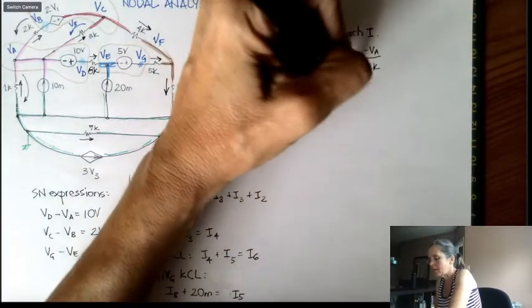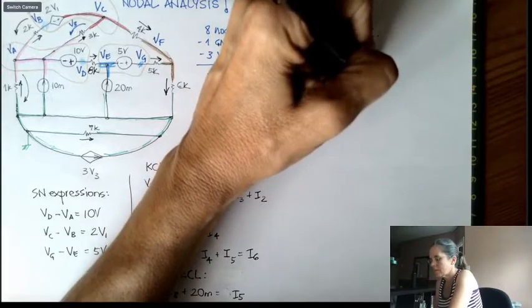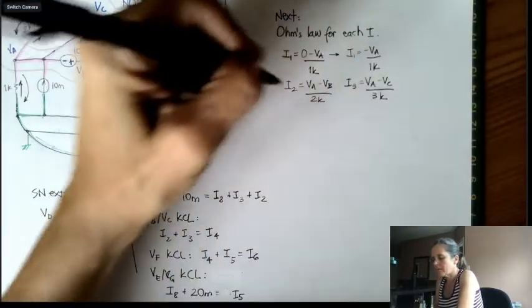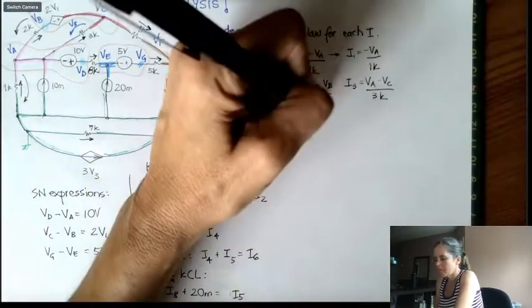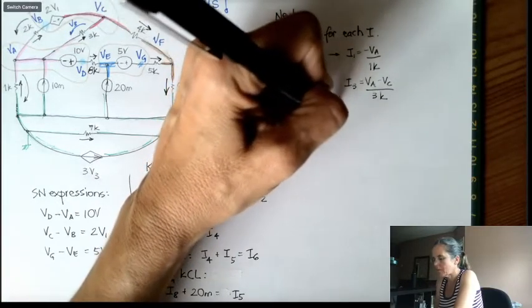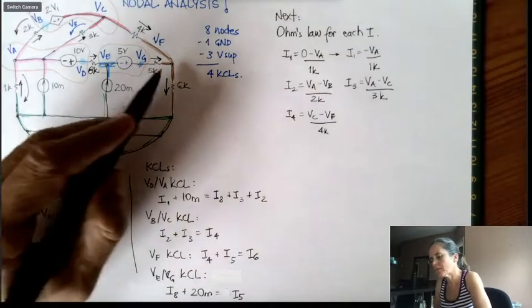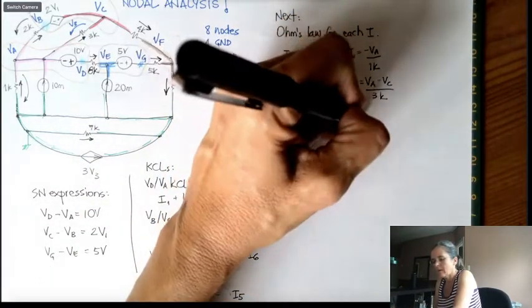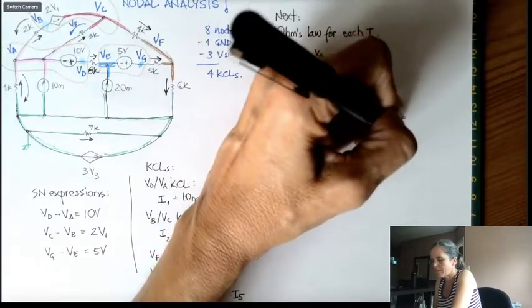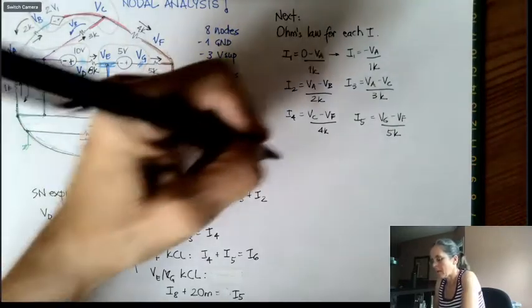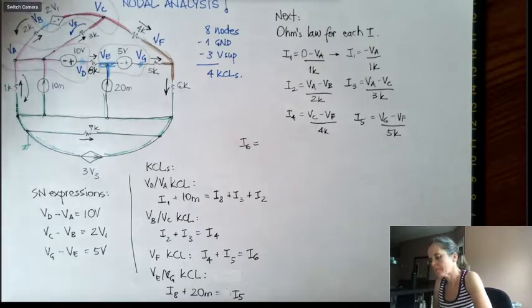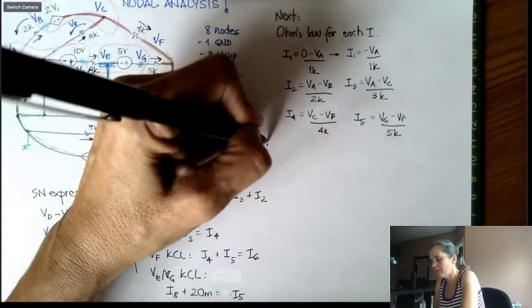And then I3 is VA minus VC divided by 3k. And then I4 is VC divided by 4k. So if you don't understand this, please post a comment because I am doing the same thing as I did for I1 and I2, but I'm going around here.